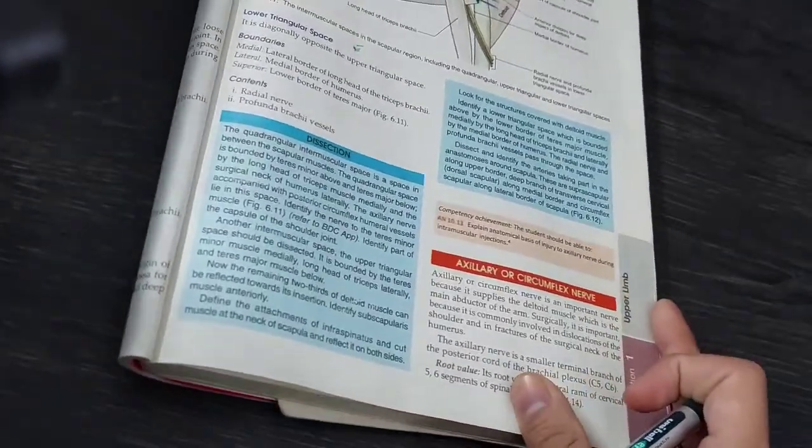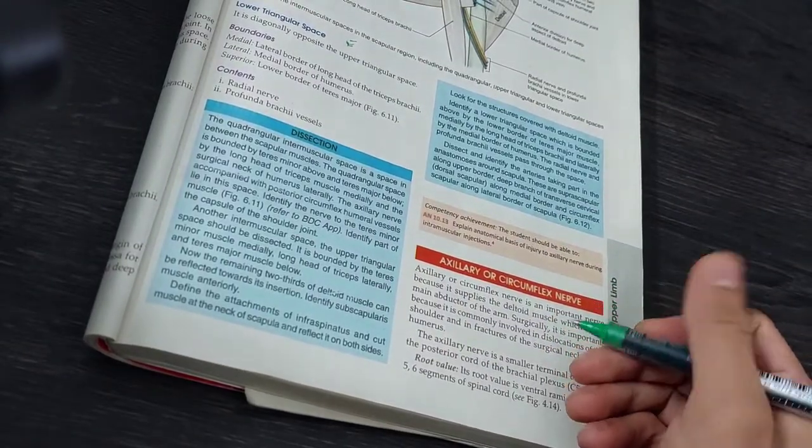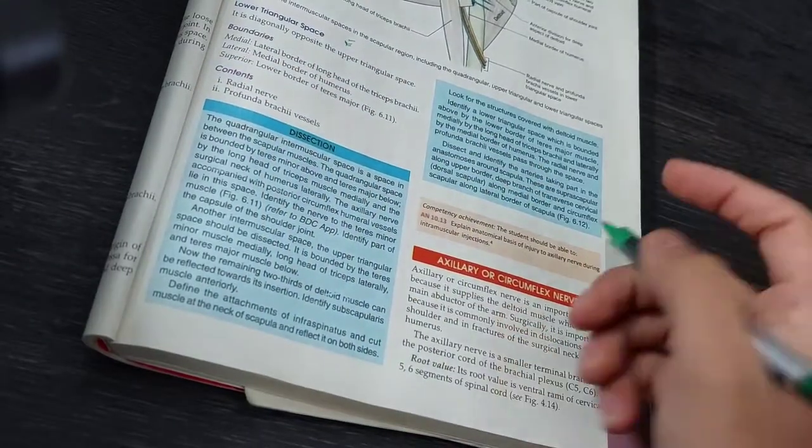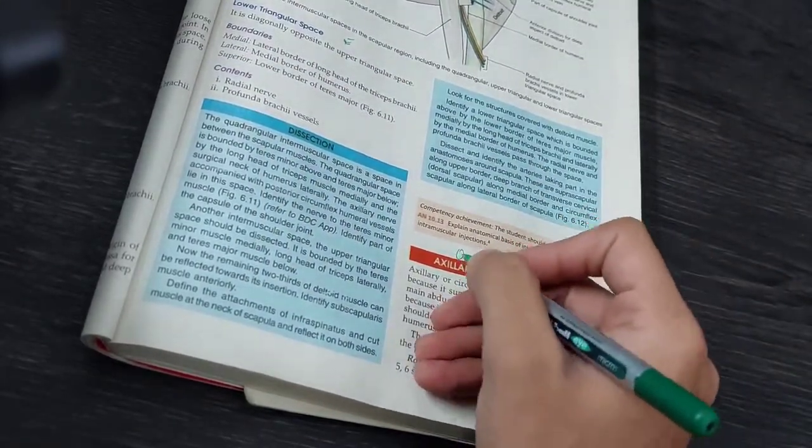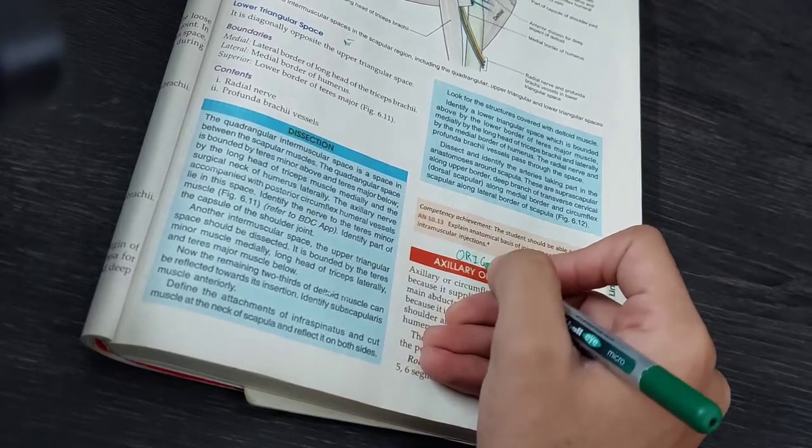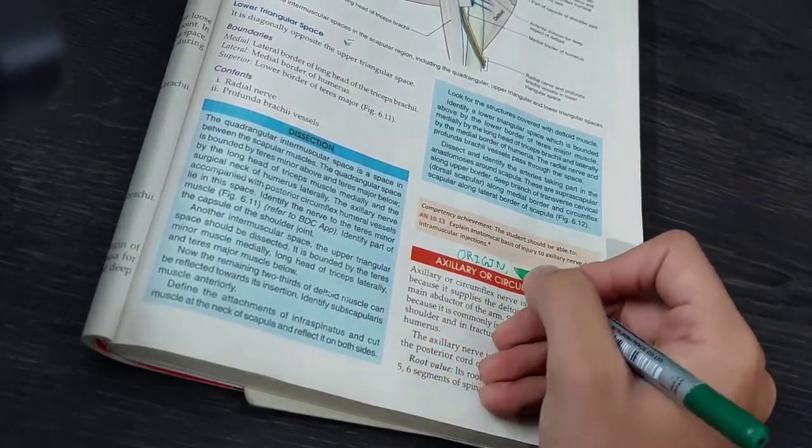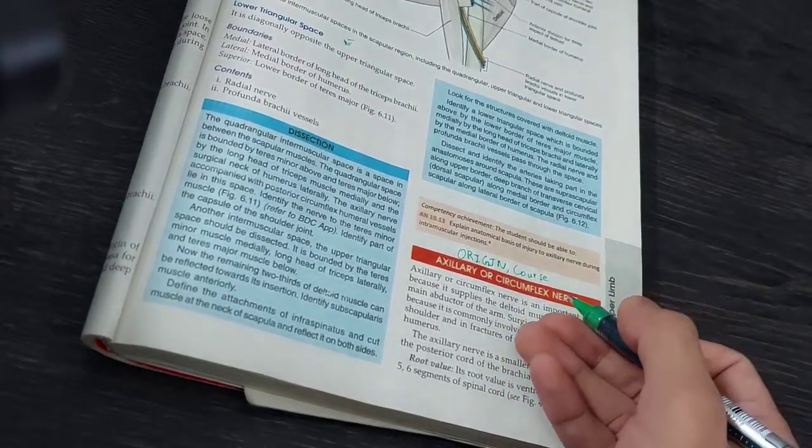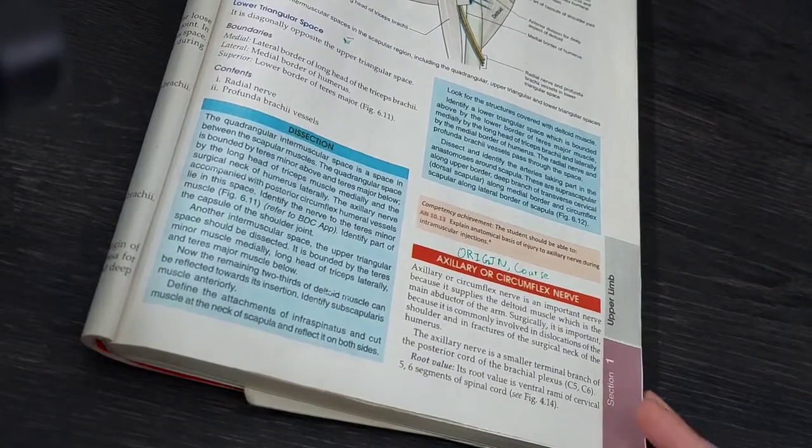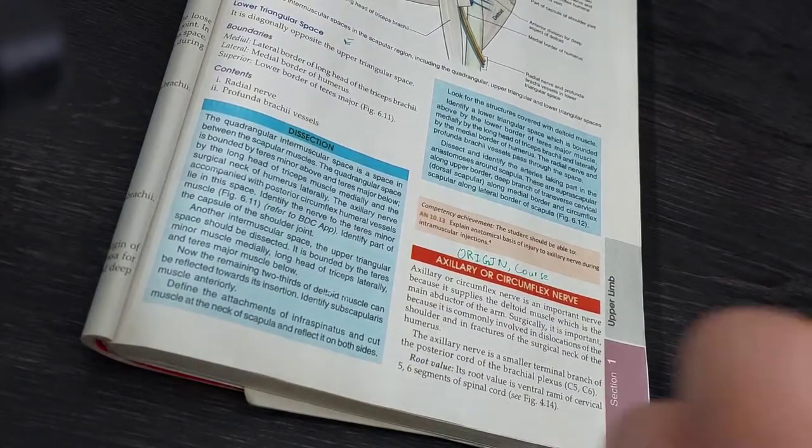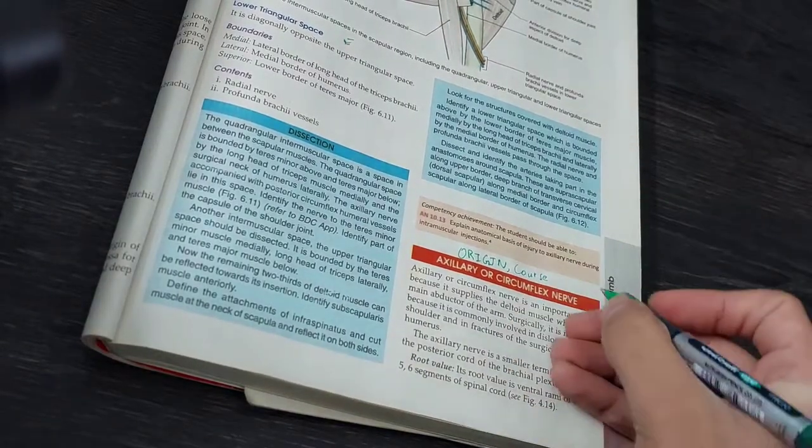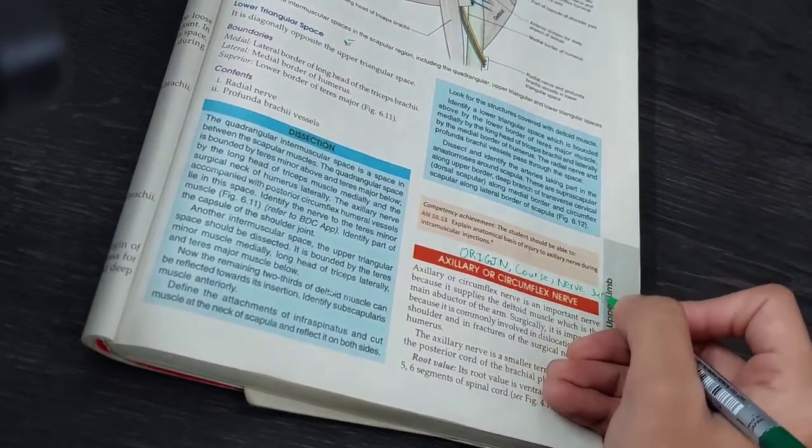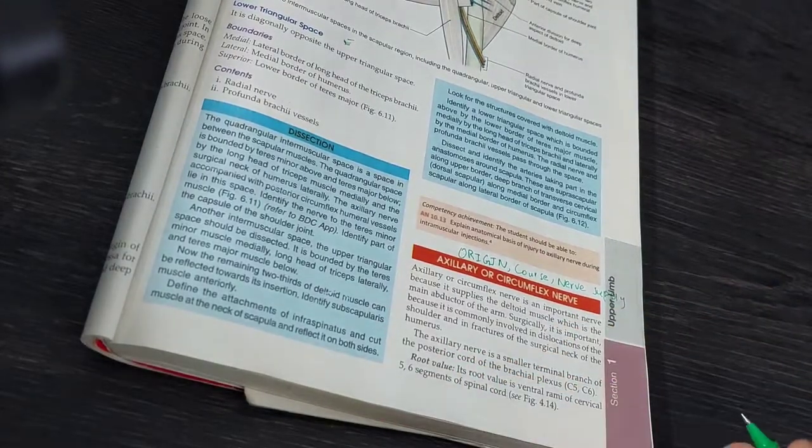And now, axillary nerve is also important in clinical point of view. We discussed the clinical point of view. So you have to remember the origin, where is it. We did not have our own course, we cannot do much. We have to remember the branches and their names, where it supplies or branches can have names.